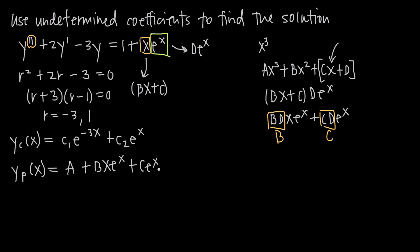Before moving forward, there's a problem: the guess for the particular solution can't include any terms that are in the same format as terms in the complementary solution. We have c₂e^x in the complementary solution, and ce^x in our guess — that's an overlapping term. So we multiply this portion by x: bxe^x becomes bx²e^x, and ce^x becomes cxe^x. Now there are no overlapping terms, since ce^x is fundamentally different from cxe^x.